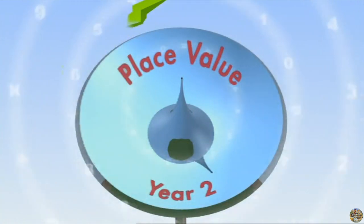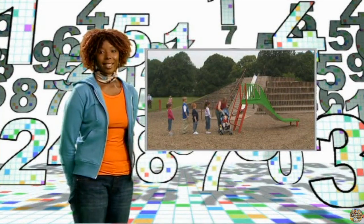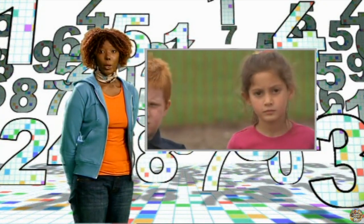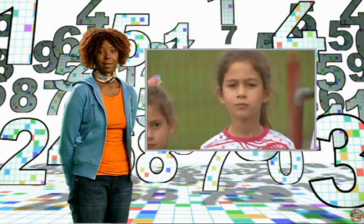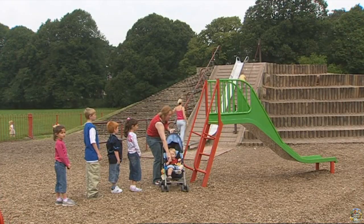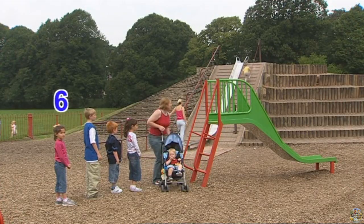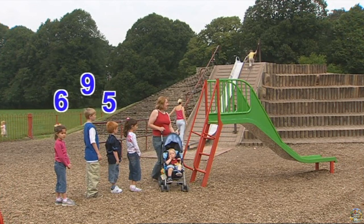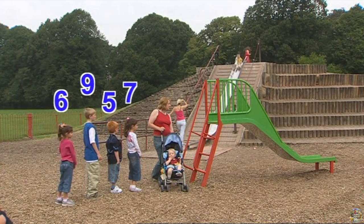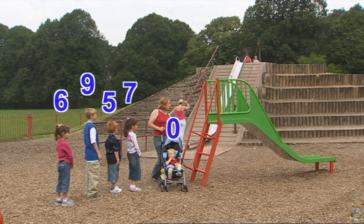This program is about place value and putting numbers in order. We can see that these children waiting to take their turn on the slide are all different ages, but who's the oldest and who's the youngest? Well, the children are age 6, 9, 5, 7, and because the baby isn't even one yet, we'll say the baby is zero years old.